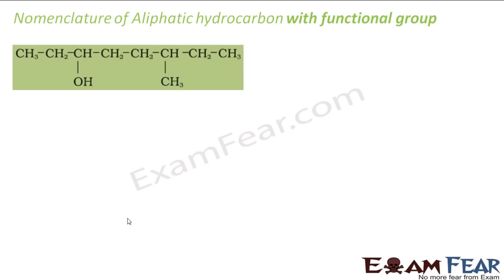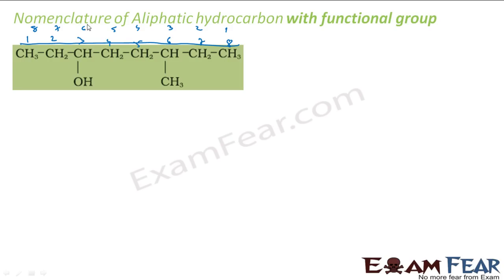Let us name this aliphatic hydrocarbon with functional group. The longest chain — let me number this: 1, 2, 3, 4, 5, 6, 7, 8. If you number from the other end: 1, 2, 3, 4, 5, 6, 7, 8. The first priority is given to the functional group. With one numbering the functional group gets position 6; with the other it gets position 3. So the second numbering is correct — the functional group should get the lowest position. At position 6 there is a methyl group — so that is 6-methyl as the prefix.